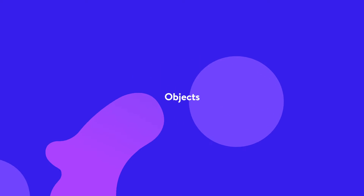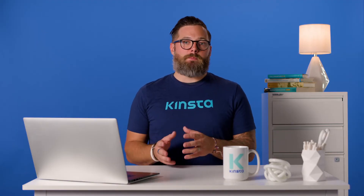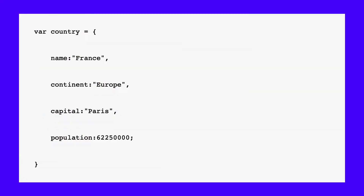JavaScript is based on the concept of objects. Objects are containers that may enclose properties, methods, or both. Consider a simple example: you have an object named country. Its properties include its name, continent, capital city, and population. You can create this object in several ways with JavaScript.